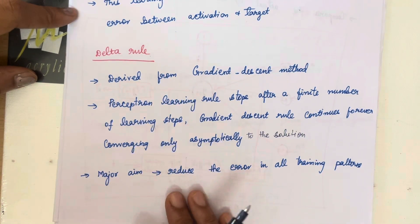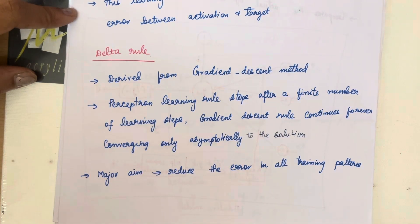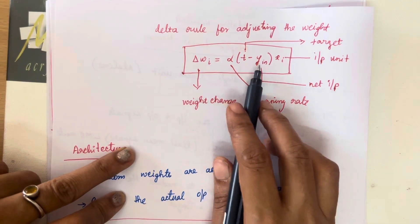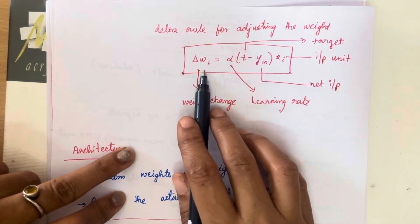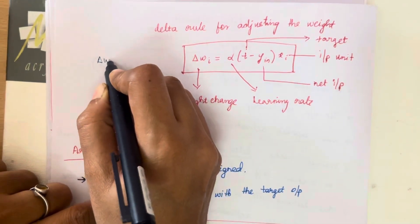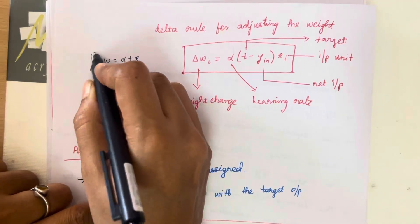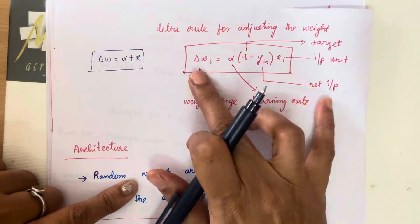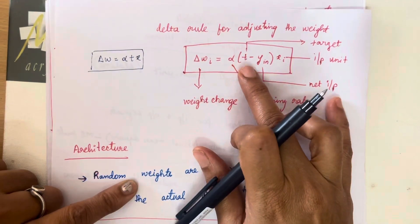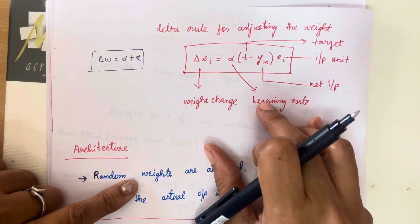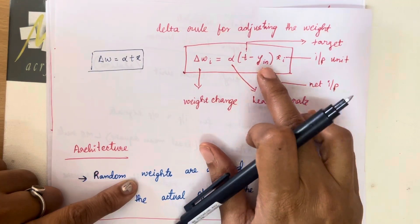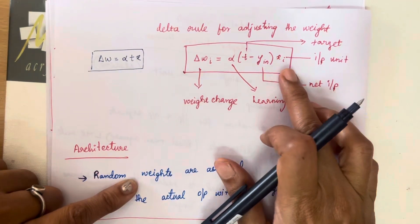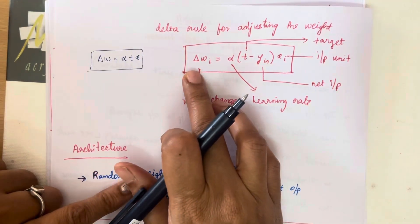The major aim of the delta rule is to reduce the error across all training patterns. The delta rule formula is: change in weights = alpha × (t − y_input) × xi. In the perceptron network the formula was Δw = alpha × t × x. But here in the ADALINE network we use this delta rule formula. Alpha is the learning rate with a value between 0 and 1, t is the target value, y_input is the output obtained after multiplying inputs and weights, and xi is the input unit.